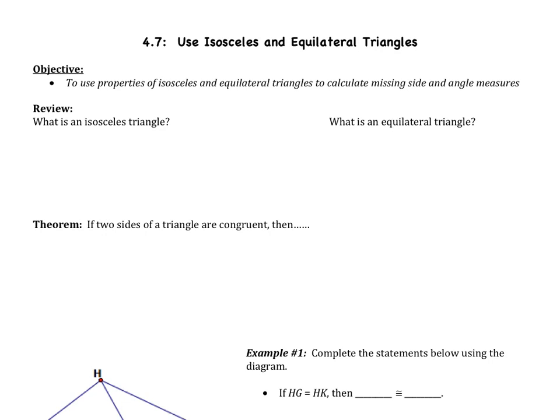Welcome to the last section of chapter 4, which is section 7: Use Isosceles and Equilateral Triangles. Our objective is to use properties of isosceles and equilateral triangles to calculate missing side and angle measures. You will be happy to know that this section is a lot more what you think of as math or algebra, where you're going to be setting up an equation and solving it, and less proofs than the previous sections have been.